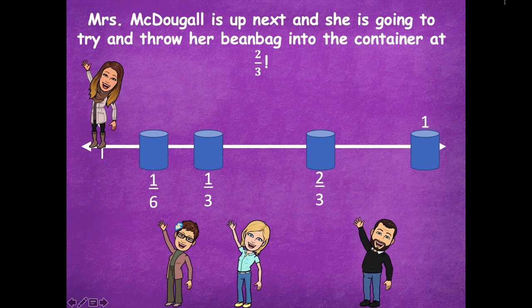Mrs. McDougall is up next and she is going to try and throw her bean bag into the container at two-thirds. This one's a greater distance from zero, so that might be a little bit harder. She was so close, but she didn't make it — it's because that's farther away, so that makes it harder. Comparing these fractions: one-sixth is less than two-thirds because it's closer to zero, or you could say two-thirds is greater than one-sixth because it's farther away from zero.